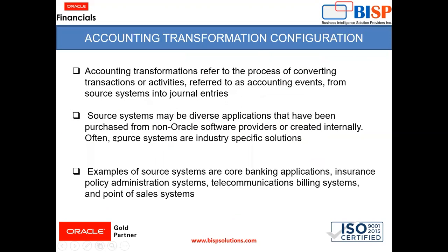With Fusion Accounting Hub, Accounting Transformation configuration can be done. Accounting Transformation refers to the process of converting transactions or activities — referred to as accounting events — from a source system into journal entries. A source system can be from diverse applications that may have been purchased from a non-Oracle software provider or created internally.